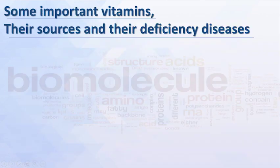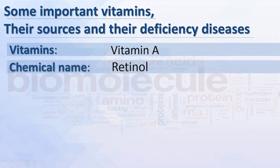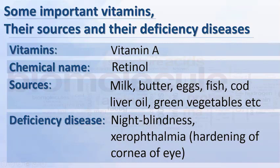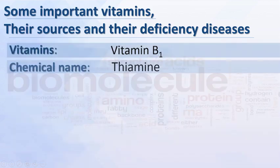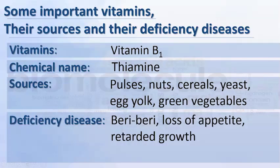Some important vitamins, their sources, and deficiency diseases. Vitamin A: chemical name retinol; sources include milk, butter, eggs, fish cod liver oil, and green vegetables. Deficiency disease: night blindness and xerophthalmia, hardening of the cornea of the eye. Vitamin B1: chemical name thiamine; sources include pulses, nuts, cereals, yeast, egg yolk, and green vegetables. Deficiency disease: beriberi.